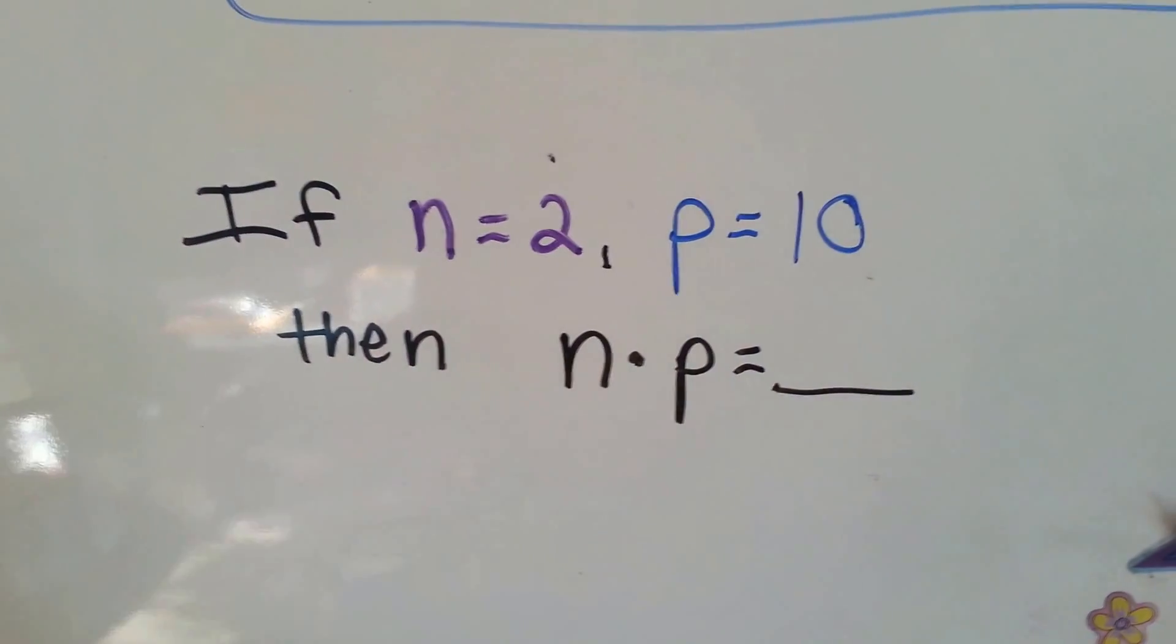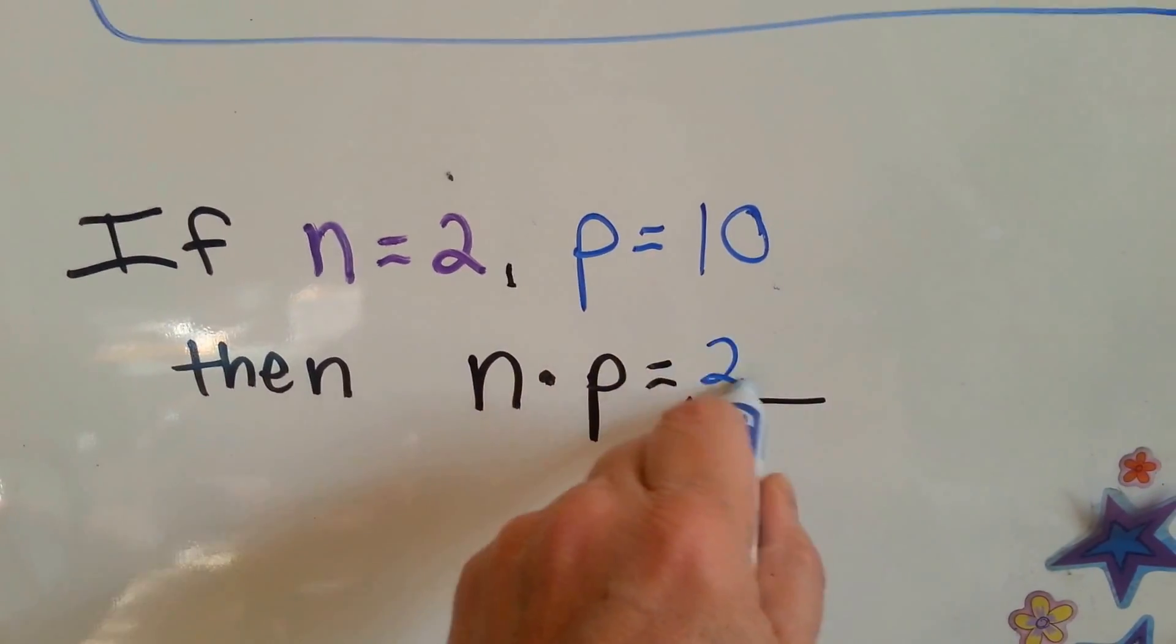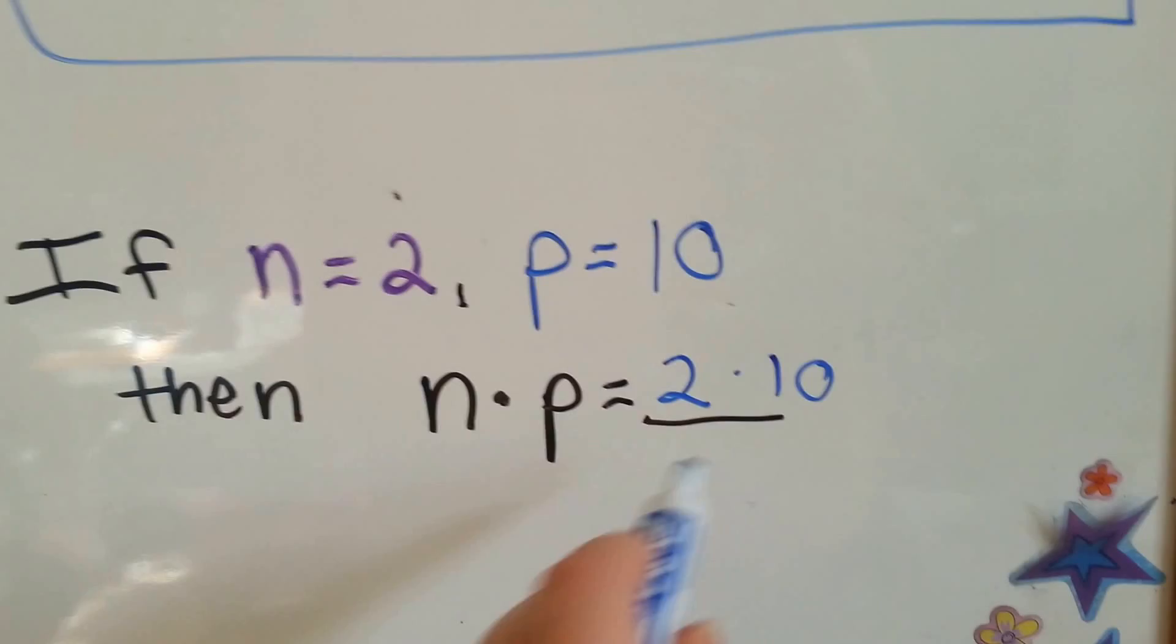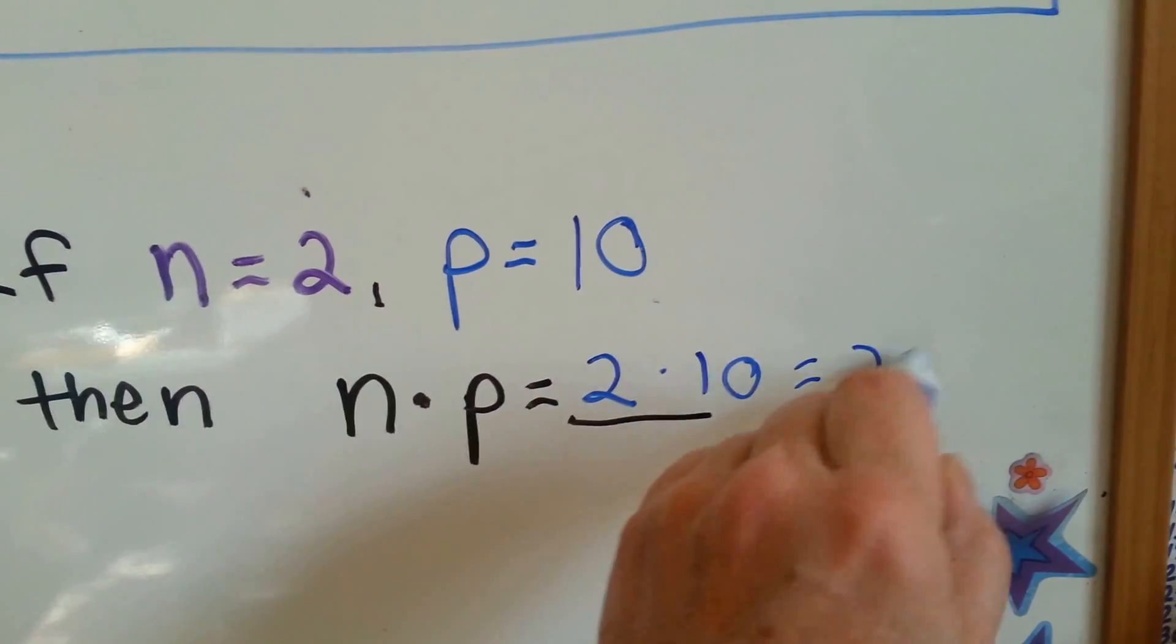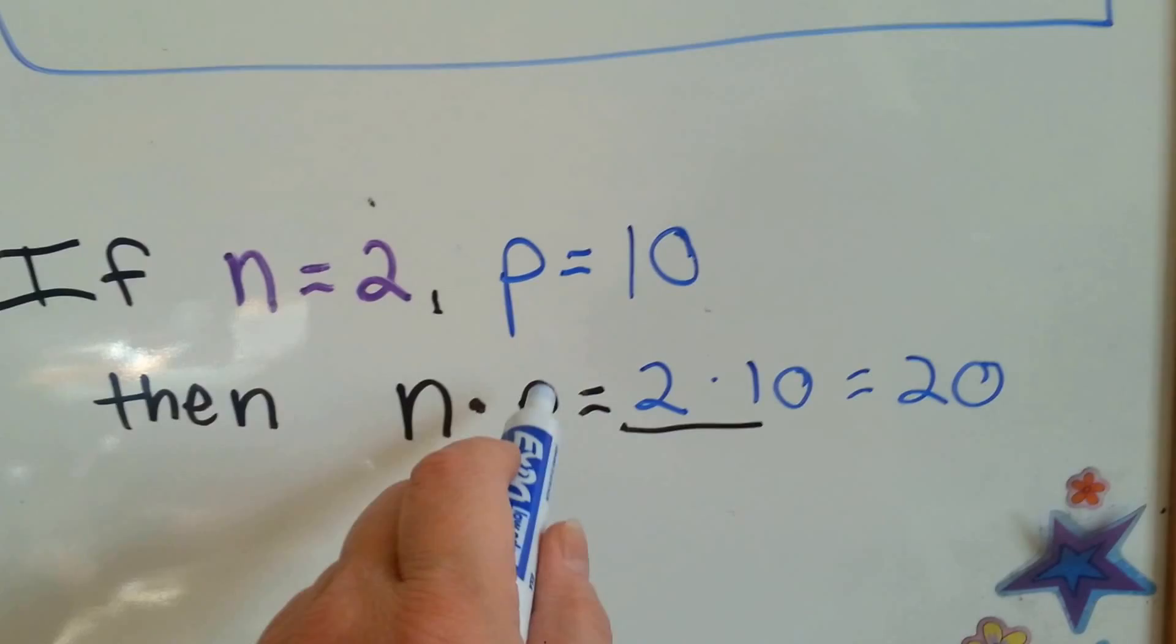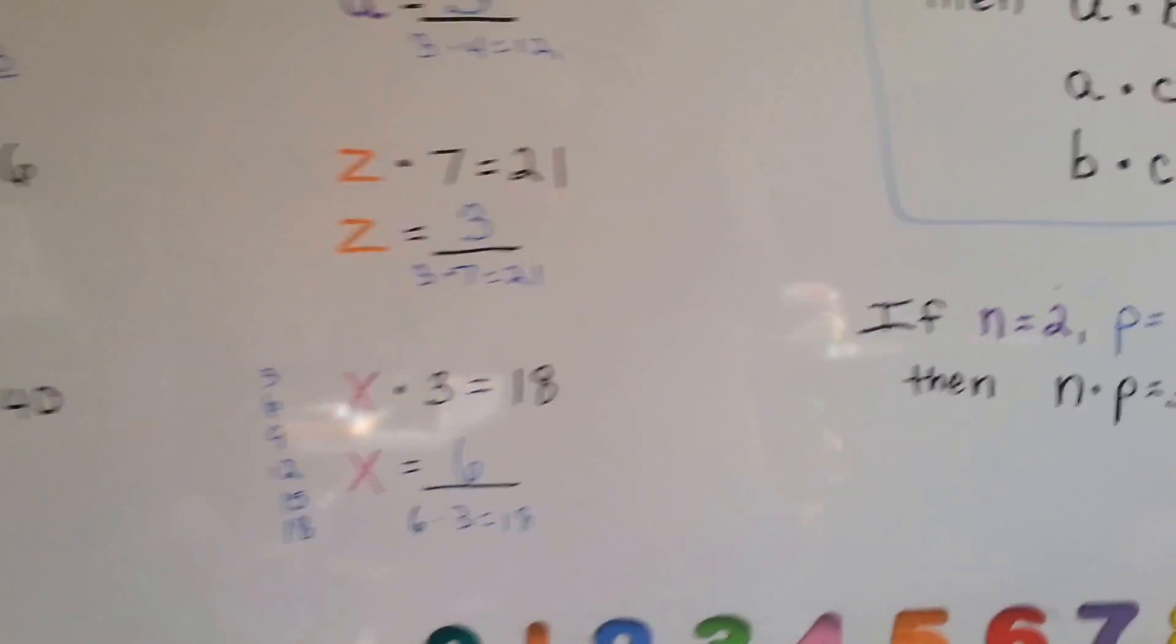So, what would n times p be? Well, if n is 2, and p is 10, it would be 2 times 10. And 2 times 10 is 20. So, n times p is 20.